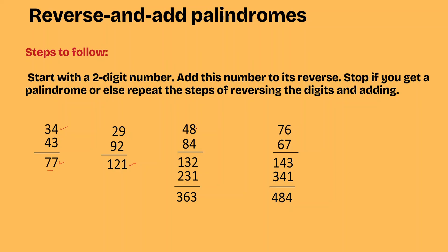Let us take another example: 48. What is the reverse of 48? It is 84. Adding 48 and 84, we get 132. Is 132 a palindrome? No, because the reverse of 132 is 231, so this is not a palindrome. Let us add 231 to 132. The addition gives us 363. Is 363 a palindrome? Yes, therefore we stop here.